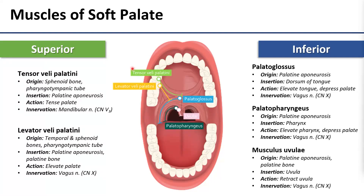Levator veli palatini is just behind it in yellow on the diagram. That is going to originate from the temporal and sphenoid bones and also the pharyngotympanic tube. Then it travels inferiorly to insert on the palatine aponeurosis. When this fires it is going to elevate the palate to close off the passageway between the nasopharynx and the oropharynx.